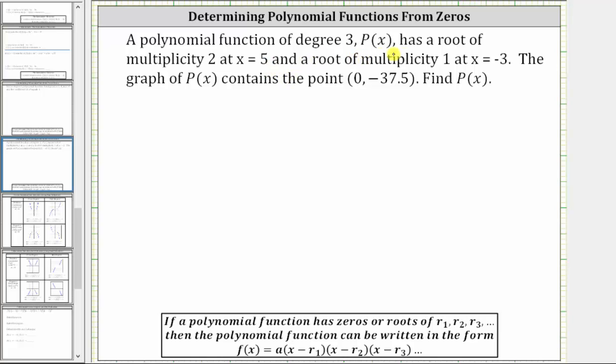A polynomial function of degree three, p(x), has a root of multiplicity two at x equals five, and a root of multiplicity one at x equals negative three. The graph of p(x) contains the point zero comma negative 37.5. Find p(x).